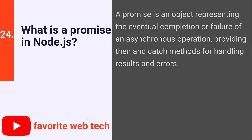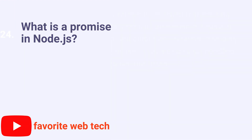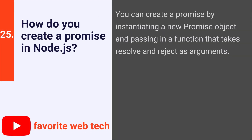What is a promise in Node.js? A promise is an object representing the eventual completion or failure of an asynchronous operation, providing then and catch methods for handling results and errors. How do you create a promise in Node.js? You can create a promise by instantiating a new Promise object and passing in a function that takes resolve and reject as arguments.